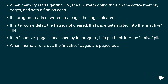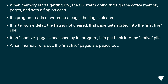When memory starts getting low, the OS starts going through the active memory pages and sets a flag on each. If a program reads or writes to a page, the flag is cleared. If, after some delay, the flag is not cleared, that page gets sorted into the inactive pile. If an inactive page is accessed by its program, it is put back into the active pile. When memory runs out, the inactive pages are paged out.